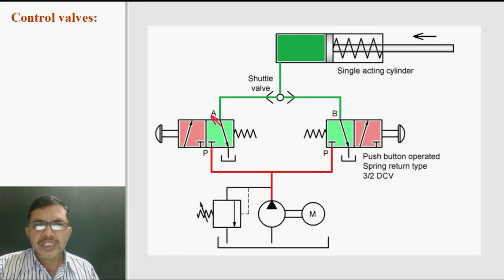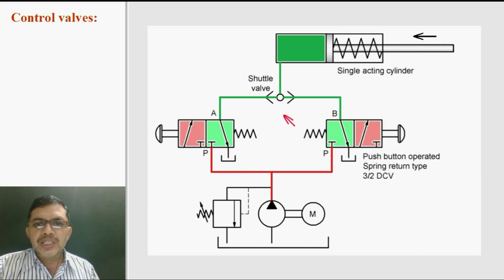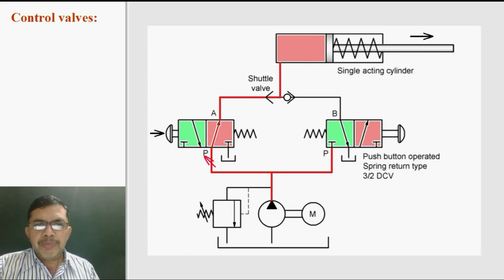This is one 3×2 valve, and this is another 3×2 valve. In normal position, there is connection from A to T, and here also from B to T. A and B are the cylinder ports and hence the cylinder retracts. If valve A is pressed, then connection is made from pump port to A port of this valve, and hence fluid will flow from B, A, and then through the shuttle valve to the cylinder, and the cylinder will extend.